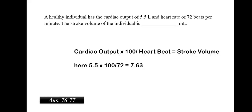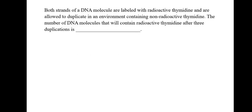A healthy individual has a cardiac output of 5.5 liter and heart rate of 72 beats per minute. The stroke volume of the individual is. We have to understand the formula of cardiac output into 100 by heart beat will be equal to stroke volume. Thus, here it would be 5.5 into 100 by 72 which would be about 77.6. Here, it is given in ml. So, we can take it as 76 to 77 ml.